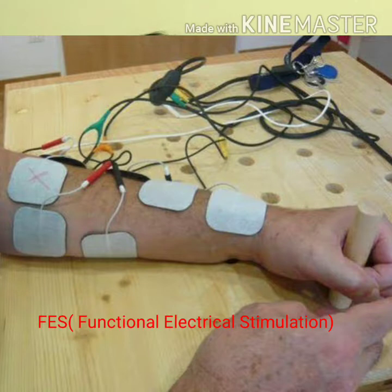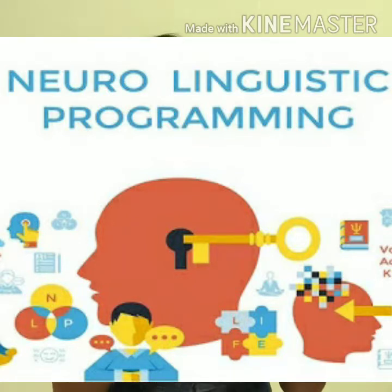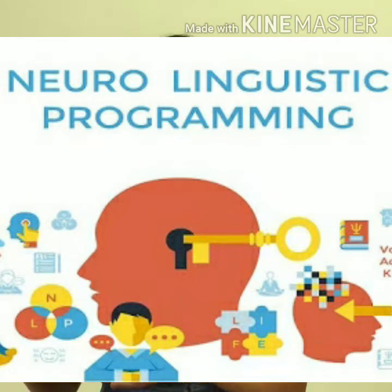We will discuss one more approach today — Neuro Linguistic Programming (NLP). As the name suggests, NLP talks about communicating with the brain. It is essentially a language of the brain — understanding how the brain functions and how we can use certain commands to elicit a proper response from the brain to improve the functional and motor outcome of the patient.